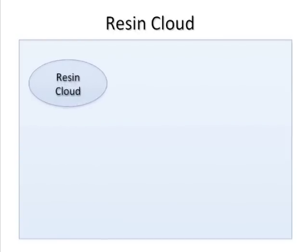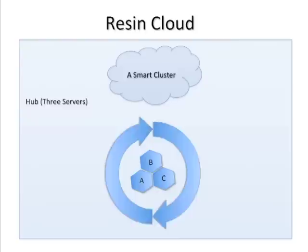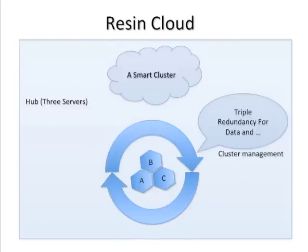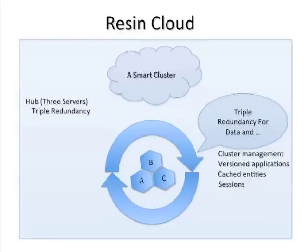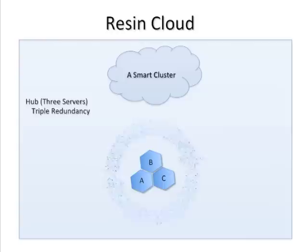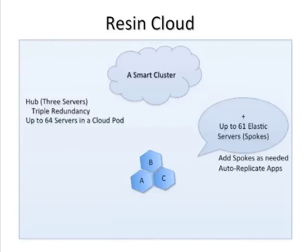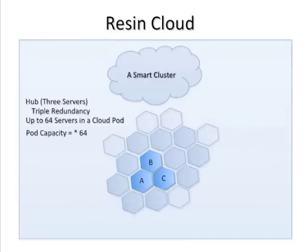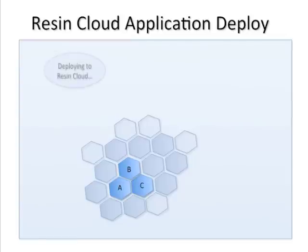Resin Cloud support is Resin's third-generation clustering support. Resin Cloud uses a hub and spoke architecture. The heart of Resin Cloud is the triad. Each pod gets a triad, and each cluster can have many pods. Each pod has up to 64 servers. There are three servers in the triad to support 99.99999% uptime.